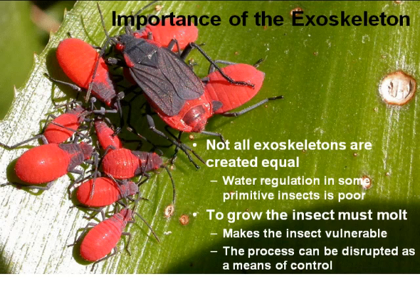Insects also have an exoskeleton, and not all exoskeletons are created equal. Some primitive insects have poor water regulation, which can be to your advantage in control — for example, to get rid of springtails and humidity-sensitive insects, simply reducing humidity can help. Also, to grow, insects must molt. Because the exoskeleton is their main support, they can only get so large before it must be discarded for a larger one. This molting process makes the insect vulnerable. Some growth regulator pesticides work by disrupting this process so that when the insect tries to molt, it cannot do so properly.